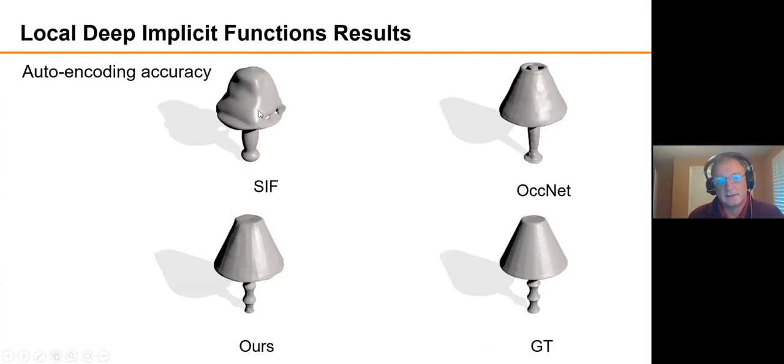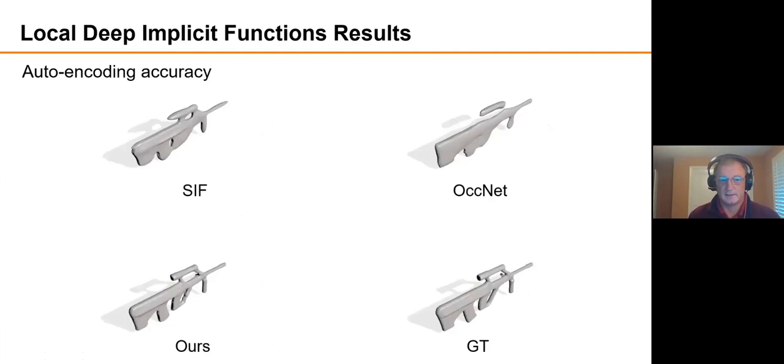SIF is what would happen if you hadn't used the deep networks in a strategy like this. So you just use a network to encode the parameters of the Gaussian, but then you don't add in those local implicit functions. So this is like what you would have gotten from just a mixture of Gaussians. The thing below is a mixture of Gaussians modulated by the output of a decoder implicit network, that deep network. And OccNet is at the time this work was done, the state of the art in methods that are globally encoded latent code for every object, and then try to decode it all at once without decomposing it into different regions of space. And so these are qualitative results that suggest that ours is just better. And then here's just another example.